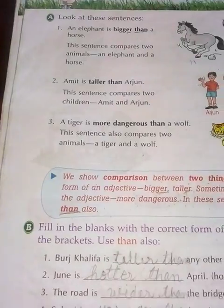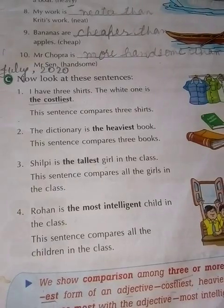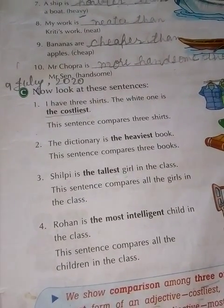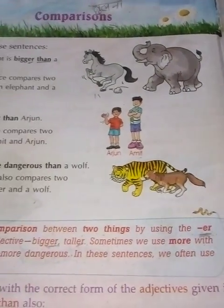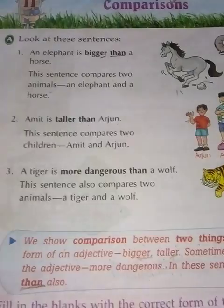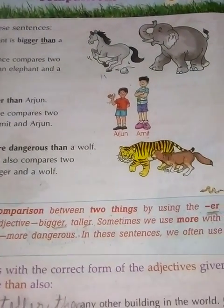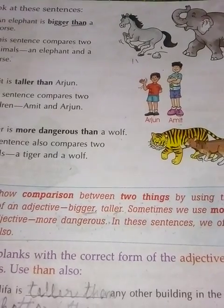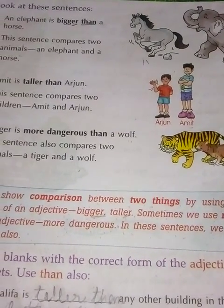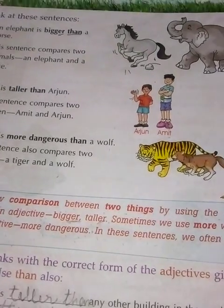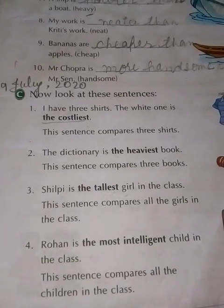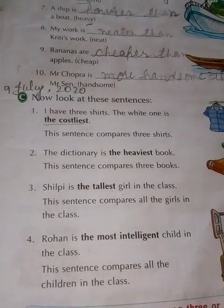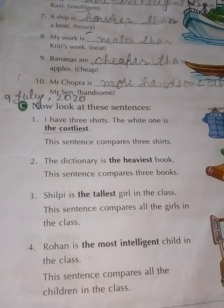Yesterday we did part B of this lesson and today we will do other exercises. Yesterday we discussed comparison between two things using the ER form of adjective, and we can always use 'than'. Today we will discuss comparison among three or more things by using the EST form of an adjective.